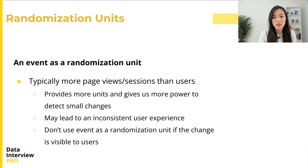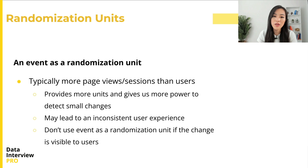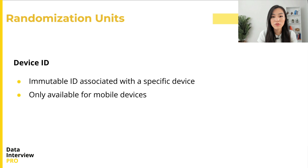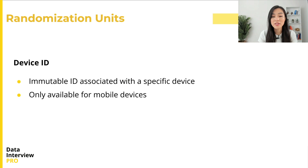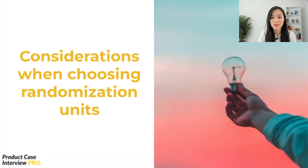Another commonly used randomization unit is a device ID. It is an immutable ID associated with a specific device. Device IDs are only available for mobile devices, so they are most commonly used as randomization units for A/B testing changes in mobile apps.